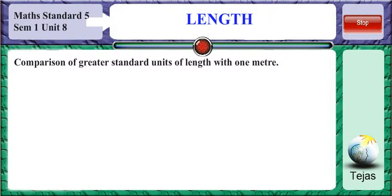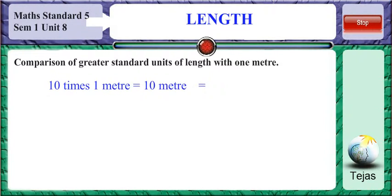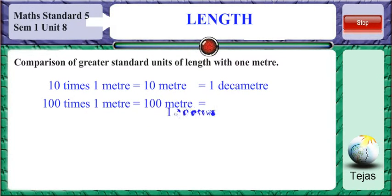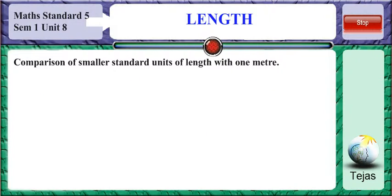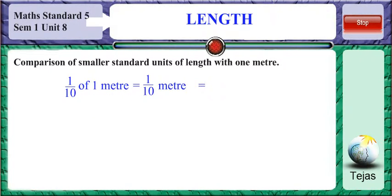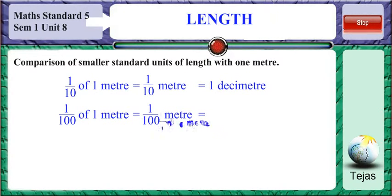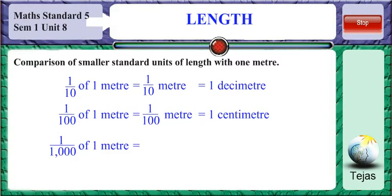Comparison of smaller standard units of length and comparison of greater standard units of length with 1 meter: 10 meters equals 1 decameter, 100 meters equals 1 hectometer, and 1000 meters equals 1 kilometer. For smaller units: 1/10 of a meter equals 1 decimeter, 1/100 of a meter equals 1 centimeter, and 1/1000 of a meter equals 1 millimeter.